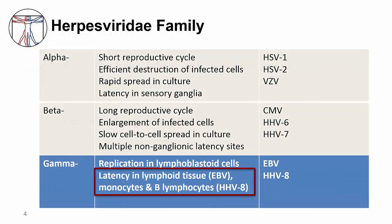Recall from the previous video on acute EBV infection that Epstein-Barr virus is one of the eight human herpes viruses. One of the hallmark features of the herpes viruses is their ability to maintain latency in particular cells in the body and then potentially reactivate to cause different disease processes later. Epstein-Barr virus is one of the two gamma herpes viruses along with human herpes virus 8. The gamma herpes viruses replicate in lymphoblastoid cells and then maintain latency in either lymphoid tissue, as is the case with EBV, or in monocytes and B lymphocytes, as is the case with HHV8.